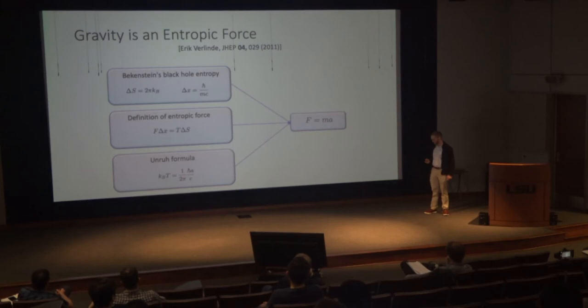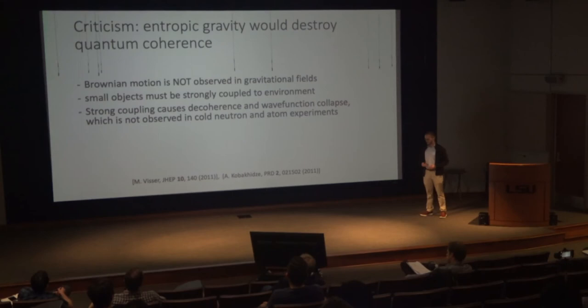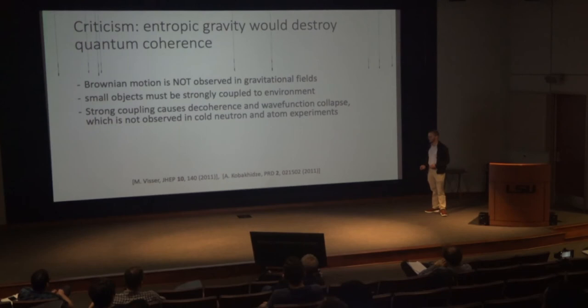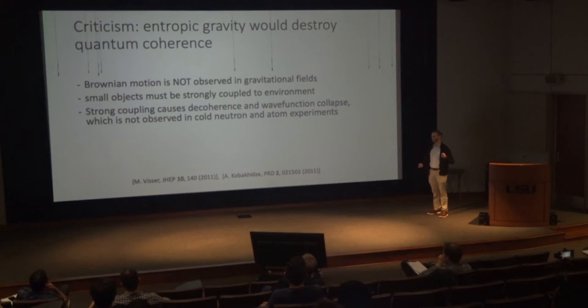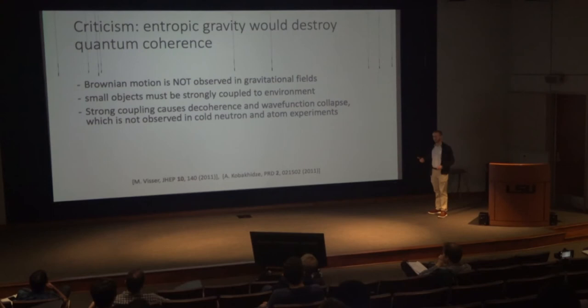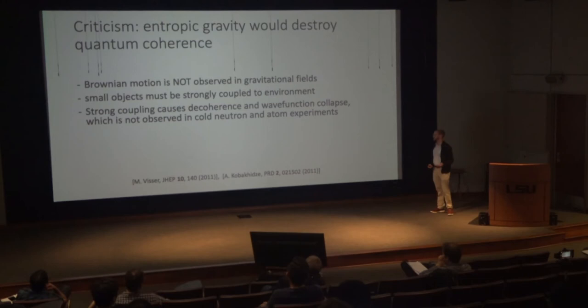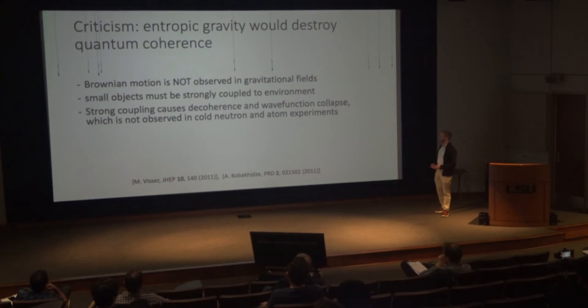This is just a motivating argument, and Verlinde has other arguments as well, but it gives some insight into what he's working toward. Almost immediately after he published this argument, there was a counterargument saying gravity is not an entropic force. The major criticism is that entropic gravity would destroy quantum coherence. The argument goes: we don't see any Brownian motion for objects residing inside a gravitational field, so if entropic gravity is true, small objects must be strongly coupled to this environment. Strong coupling is believed to cause decoherence and wave function collapse, which we do not observe in cold neutron or cold atom experiments. Some have argued that entropic gravity just cannot be true on purely physical grounds.